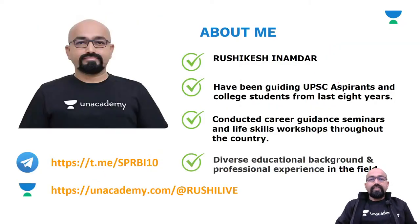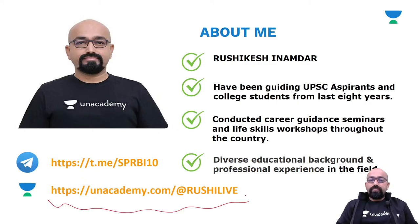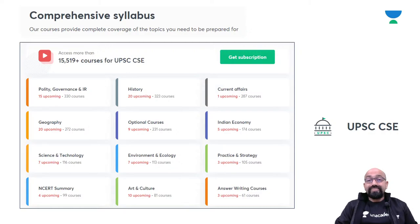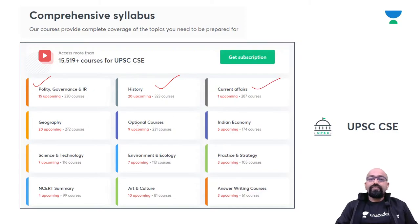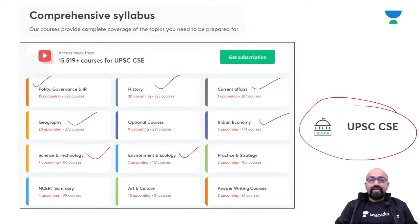I'm Rishikesh Inamdar, having experience of more than eight years in the field of UPSC guidance. You can follow me on Unacademy and join our Telegram group using the link. We have 15,000 plus courses available on our platform including Policy Governance, International Relations, History, Current Affairs, Geography, Indian Economy, Science Technology, Environment and Ecology, and many more. Start your preparation with Unacademy and let's crack it.